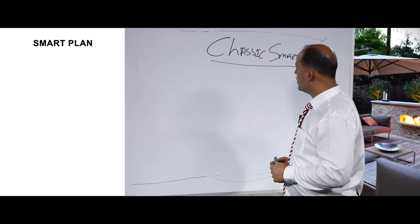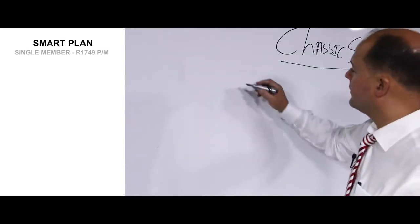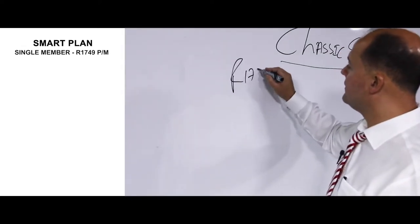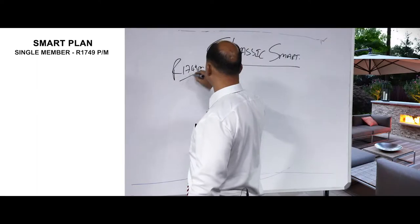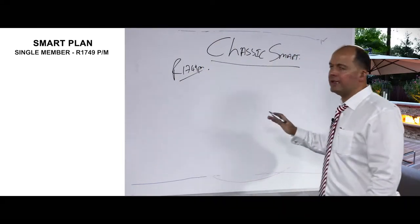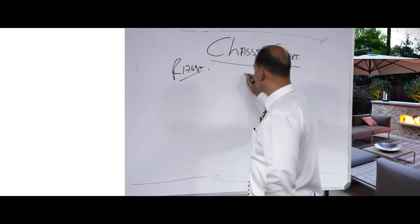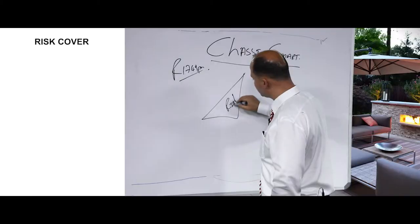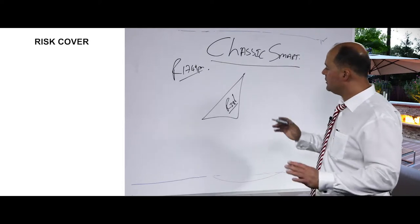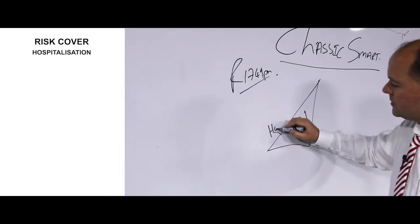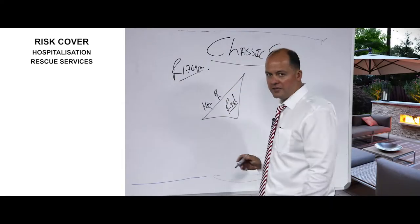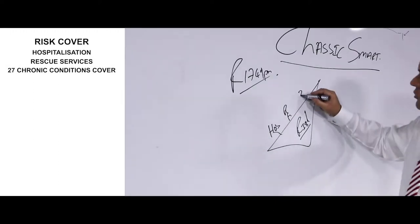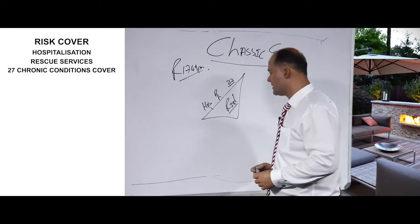Classic Smart Plan: a single member monthly contribution amounts to 1,749 rand per month. The plan is mainly a medical aid hospital plan consisting of risk cover. So the main focus point on this plan is risk cover. Risk cover means you will be covered for one, hospitalization; two, rescue services; and three, the 27 chronic conditions as laid on by law.